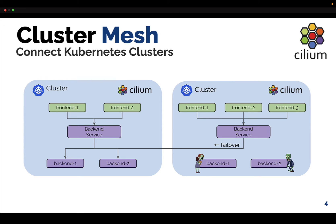That means that, as shown in this example, once the backend pods in one cluster are failing for whatever reason, the traffic hitting the backend service will fail over to the remaining endpoints in the other cluster, which are still available.